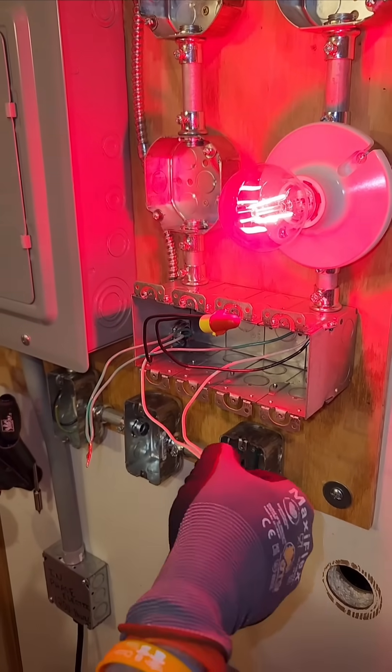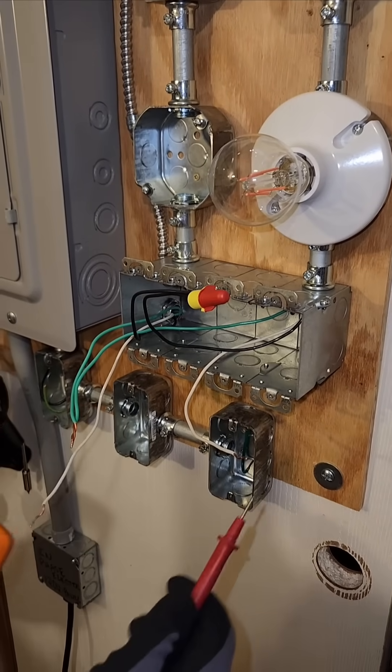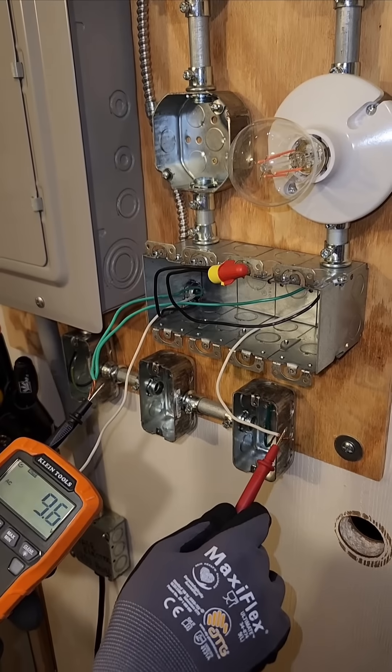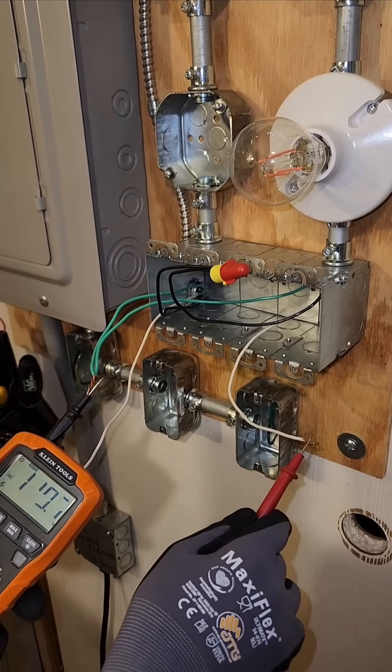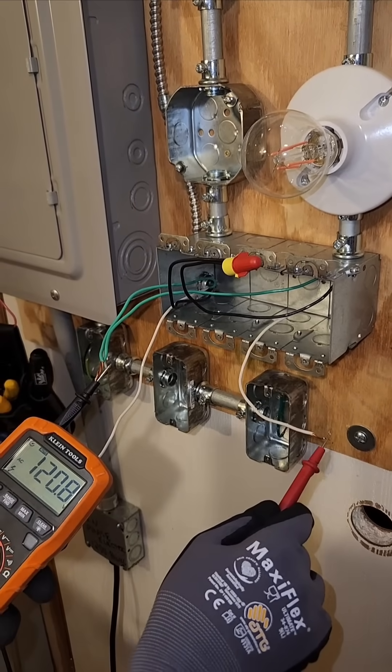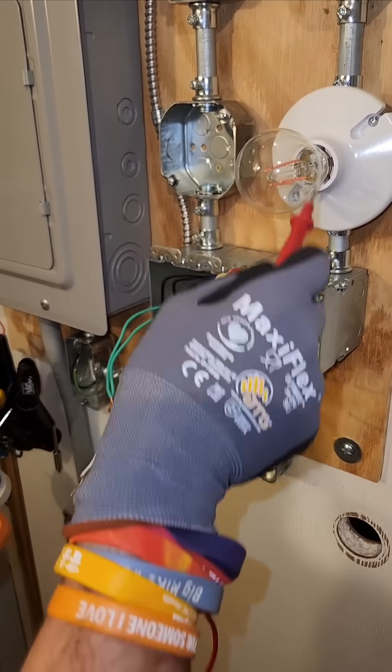But now let's break this neutral connection. Now what we're going to find is that we have 120 volt potential between this white and this green. So now we have 120 volt potential relative to ground off of the white wire that's coming off of the light bulb.